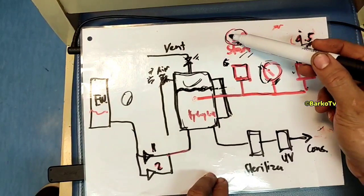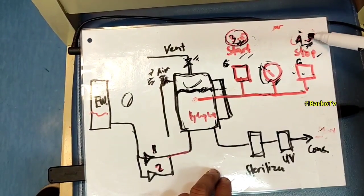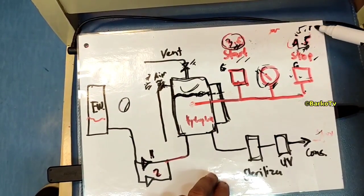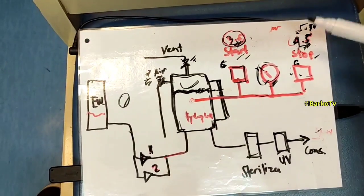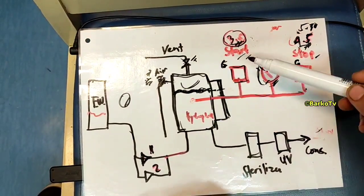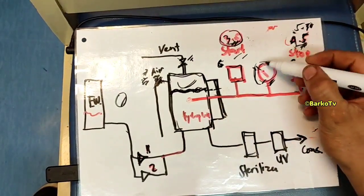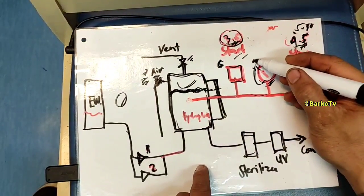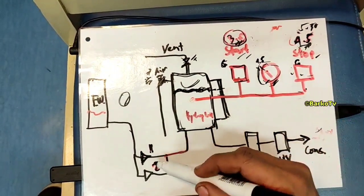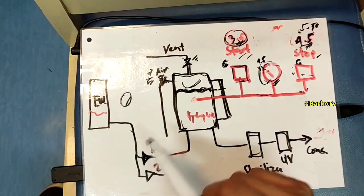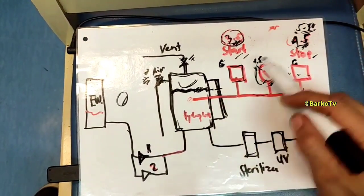We have a problem: the stop pressure switch is set at 4.5 bar, but the pump continues running past that. When put in auto, it reaches 4.5 bar but the pump keeps running — it only stops at 5.3 bar. That is the problem we need to fix.